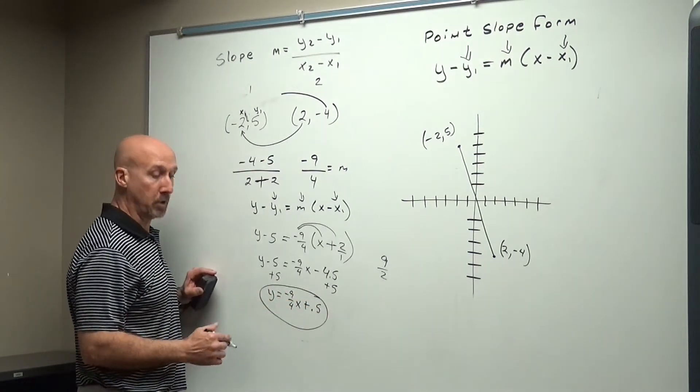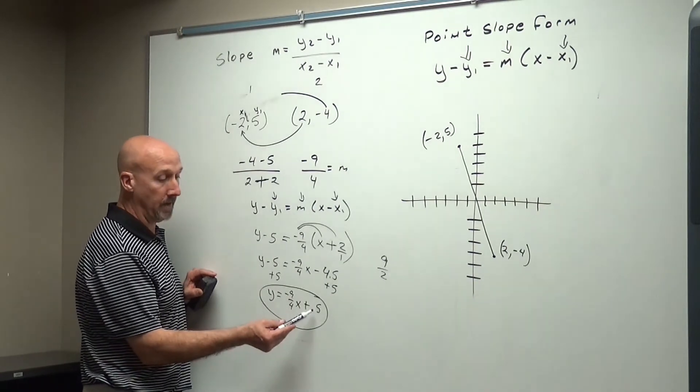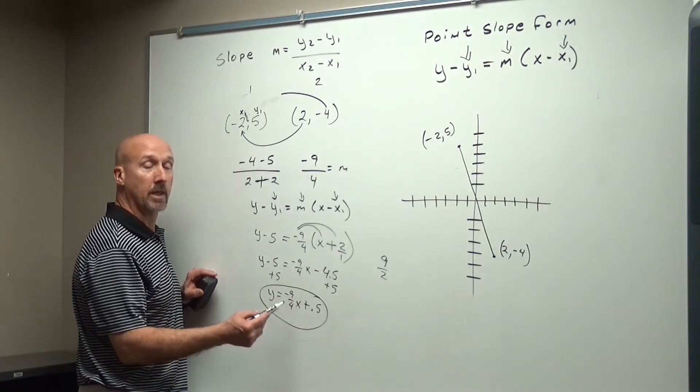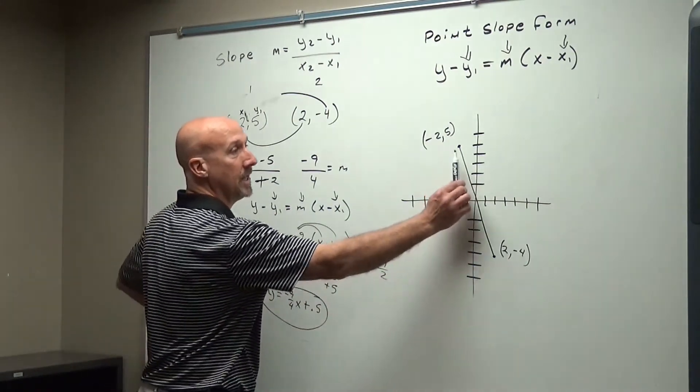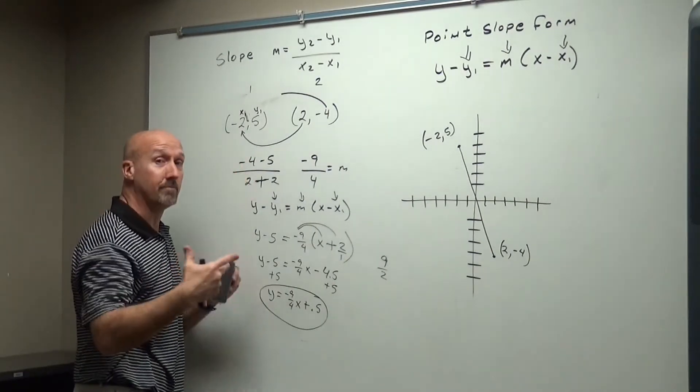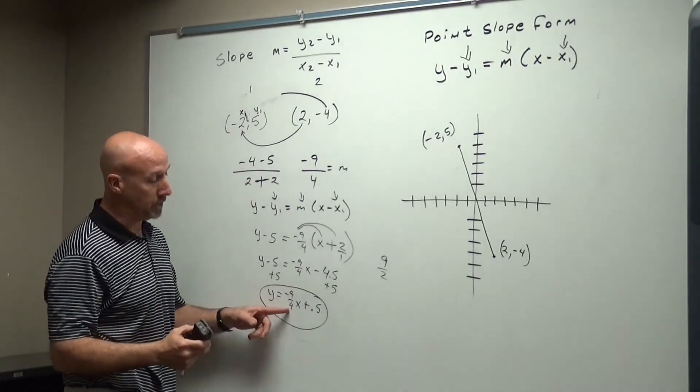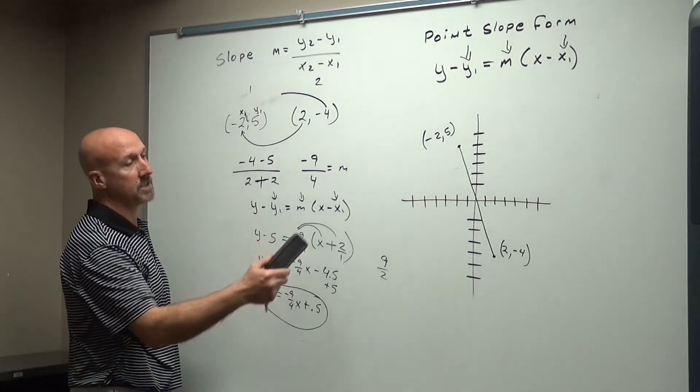Either case, I'm good. We don't want to change this one to a decimal. We want to leave this as a fraction. You always want to leave slope as a fraction, because that allows you to count up and over. If this was a decimal, you'd have to count up and go over. It's a lot harder, so you want to leave the slope as an improper fraction.